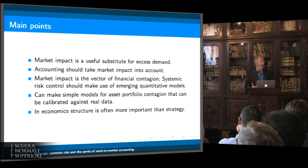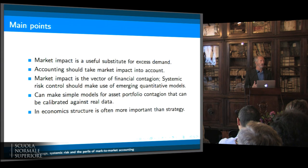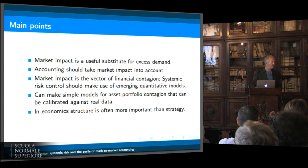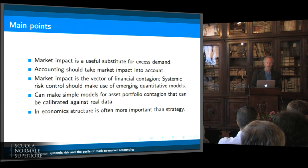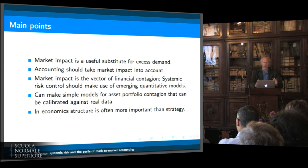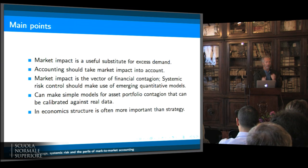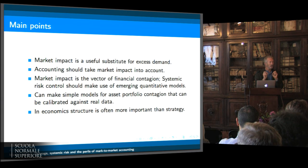With that said, I have to make a caveat: what we've assumed is that you have the square root function, which involves an orderly execution. Under disorderly processes that may be out the window, and I don't think we understand very well what fire sales do — although Pete is suggesting that maybe we do with his proposal. I've tried to argue that accounting should take market impact into account. To me this is a no-brainer. I think you can quibble about whether we have exactly the right impact function, but that ought to be the debate. I think regulators and private investors should all be doing that.